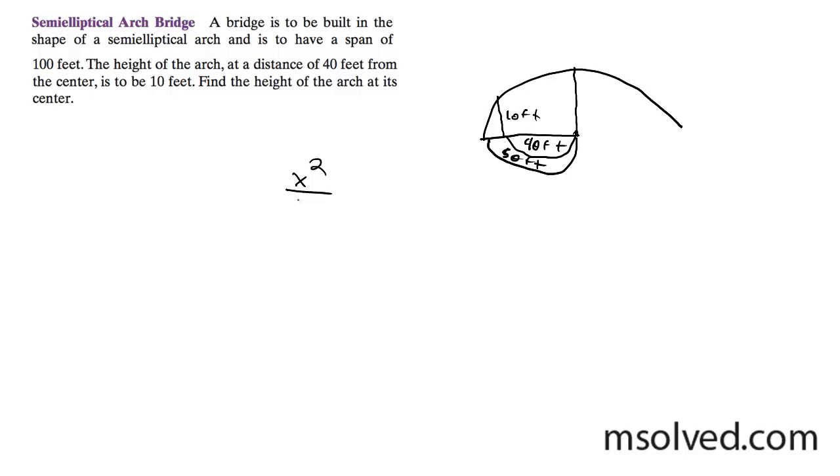It's going to be x squared over - we know it's 50 feet, the major axis is - and then y squared, we don't know, actually this is what we're looking for, the b squared, equal to 1.